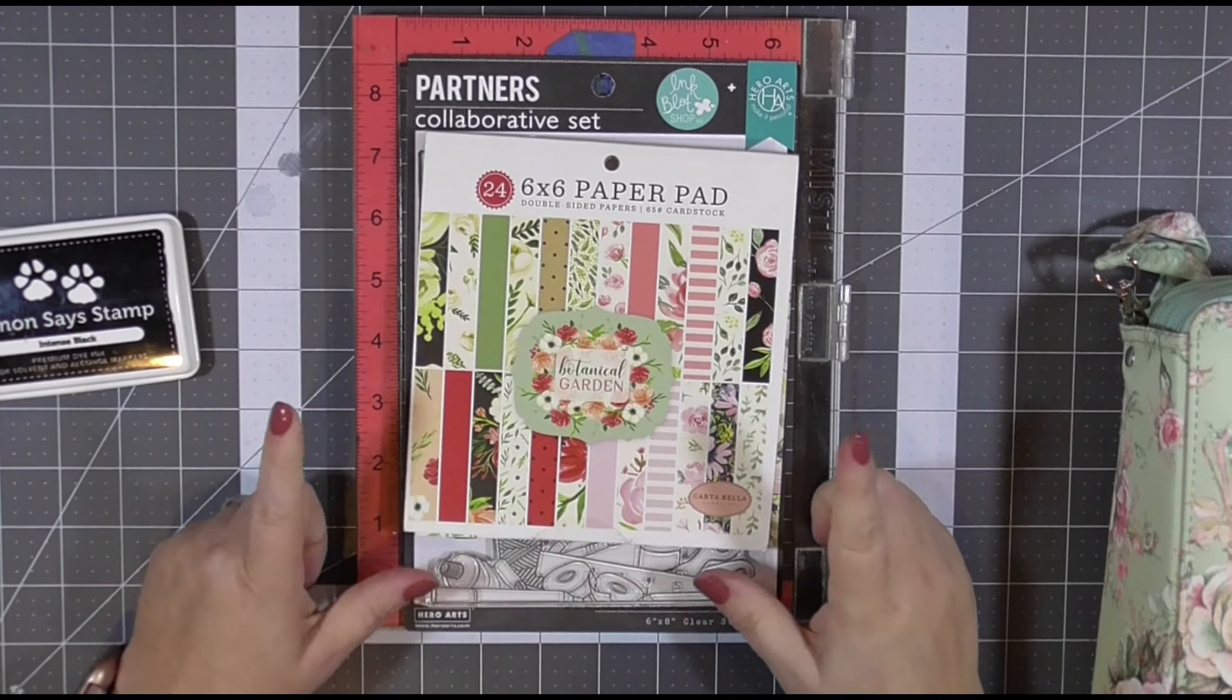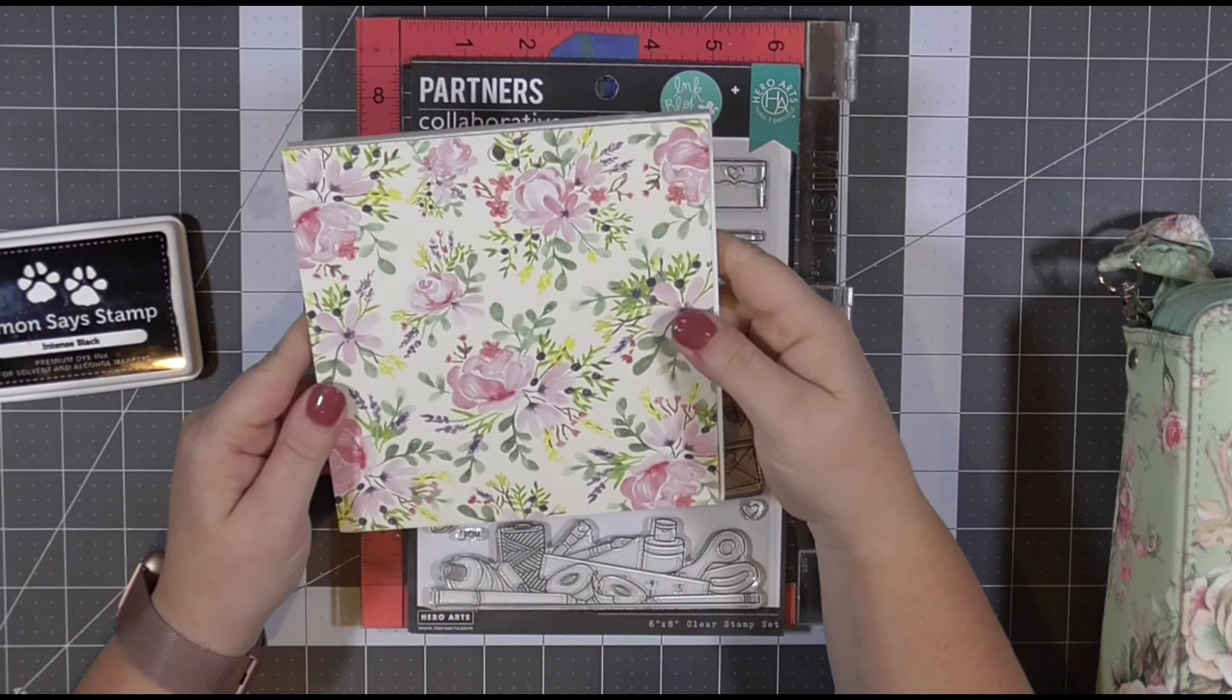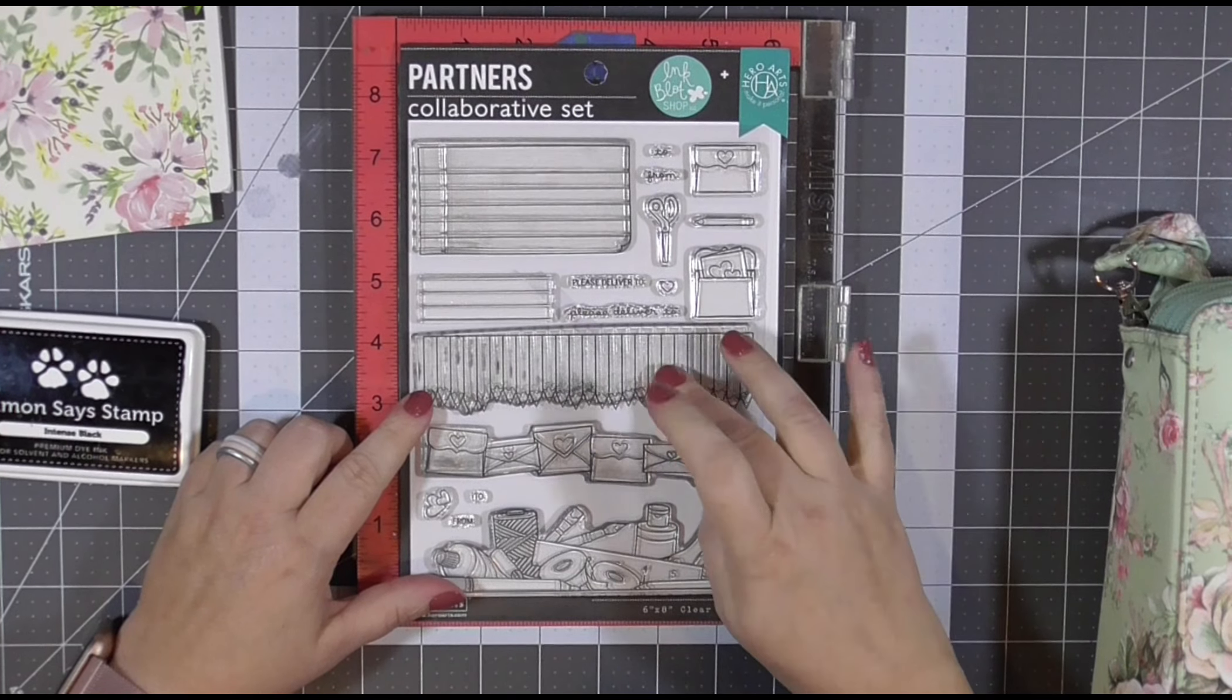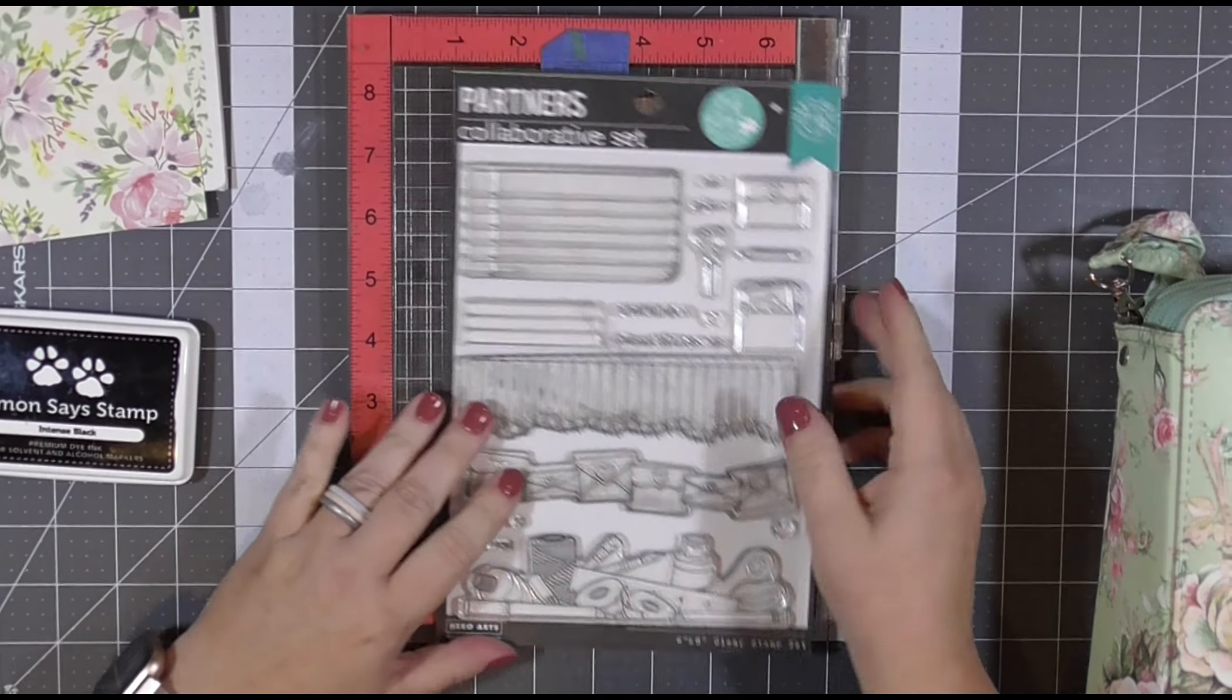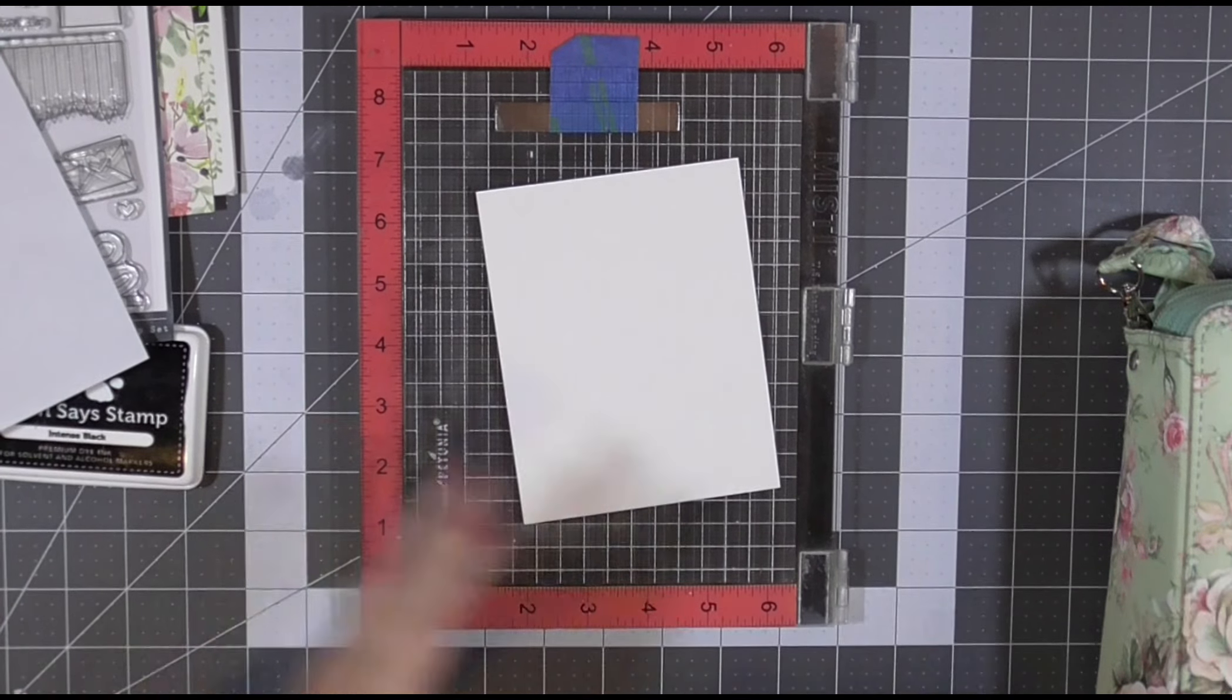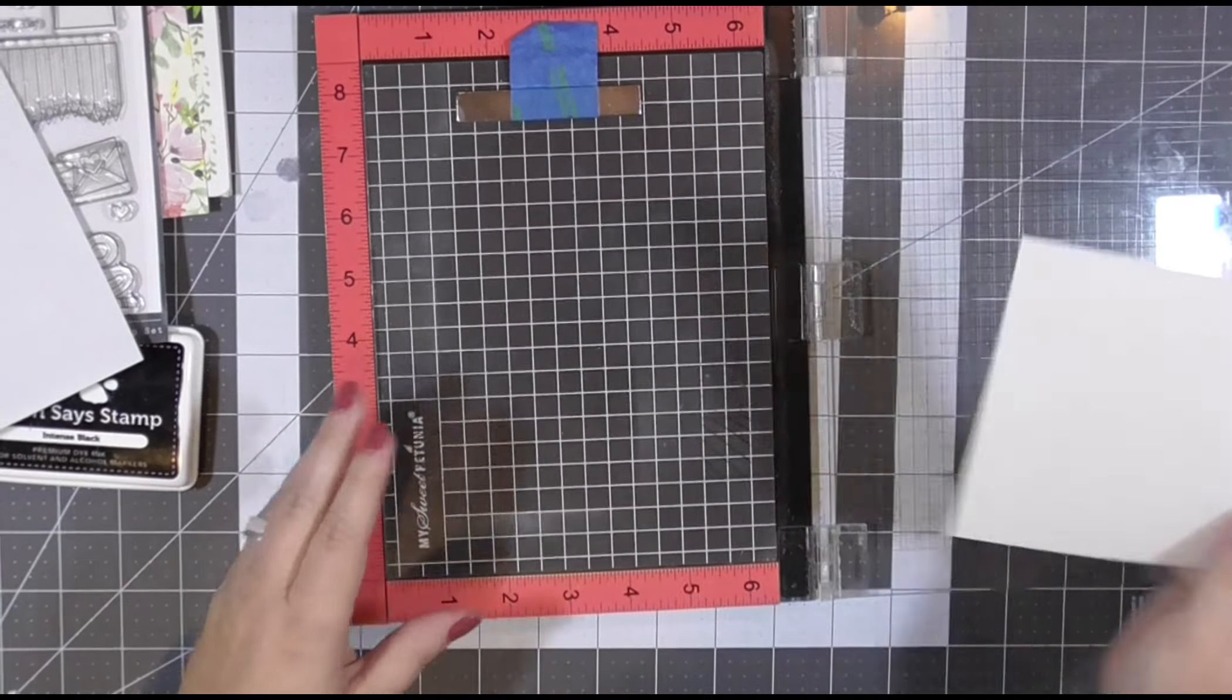So I have a paper pad. I'm actually not using it on my card. I used a piece of paper from this pad as a color inspiration. I'm going to be coloring the Please Deliver Ink Blot Shop and Hero Art Collaborative Stamp Set. And I'm going to be using Prismacolor Pencils. There's going to be a little bit of stamping, a little bit of masking. I will not add a sentiment to this card because I will just wait to see what I need it for in the future. I anticipate it will be a teacher card.